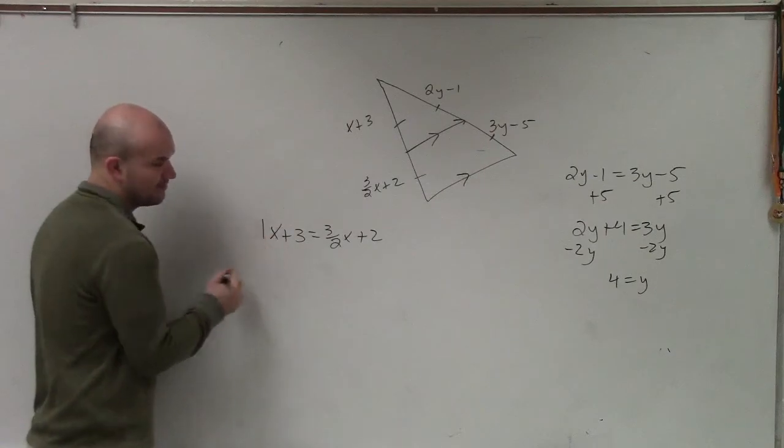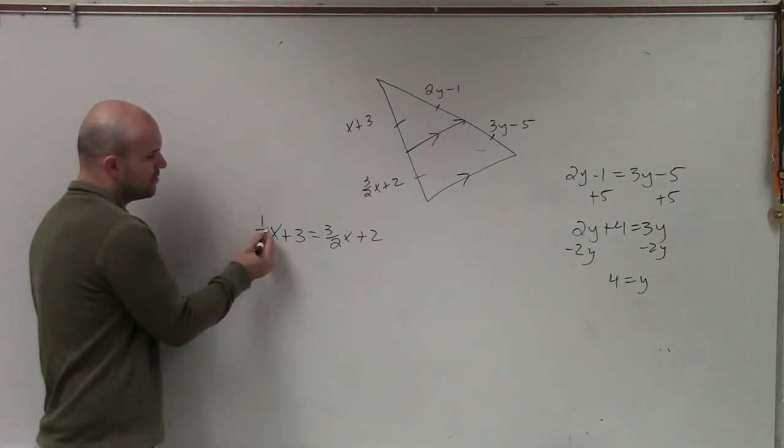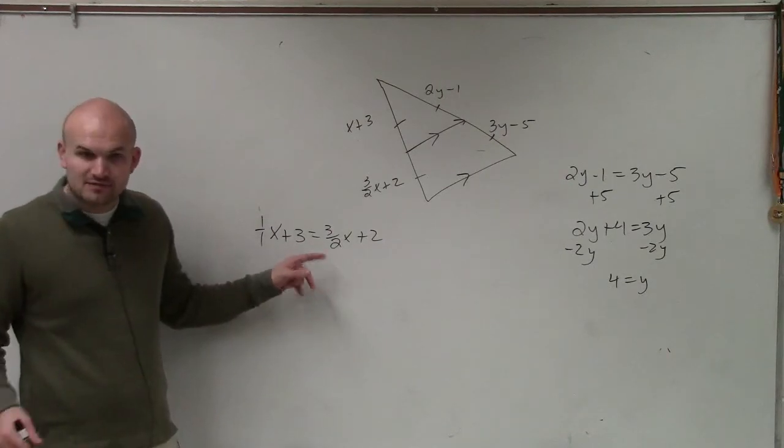But now we're talking about a fraction. So what I would probably do is write this as 1 over 1. But notice the fraction has a denominator of 2. So I would actually change that to 2 divided by 2.